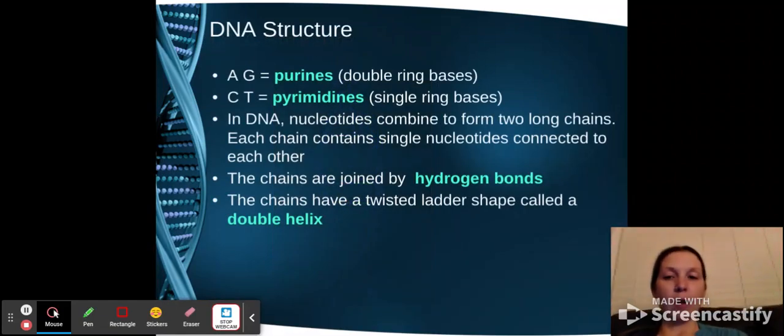So that was just a quick show of what the DNA structure looks like. So now let's talk a little bit more about the parts of DNA structure. So remember A and G are called purines, which means they have a double ring base. And then C and T are pyrimidines, which means they have a single ring base.